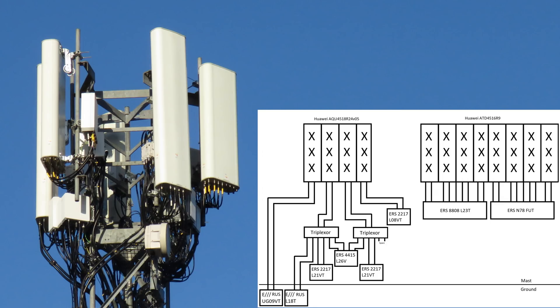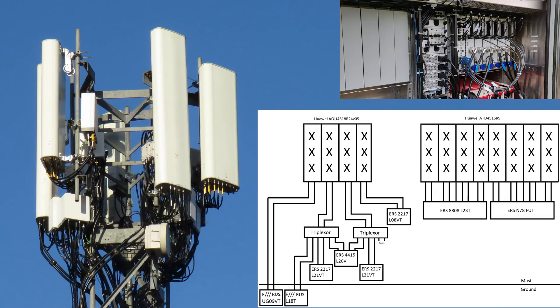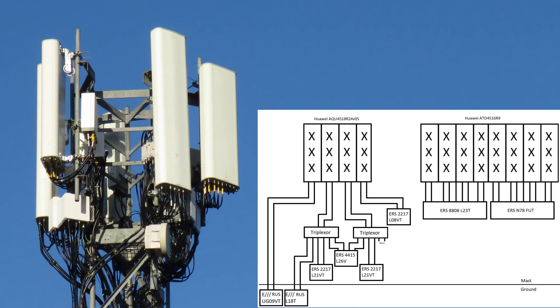This is the schematic for this Beacon 2 site and to just go over everything again. So the 900 megahertz comes from the ground and then that's fed up through conventional feeders into low ports on the Huawei AQU quad band 8 port antenna. The 800 megahertz goes into the other low band ports and comes from an ERS 2217.